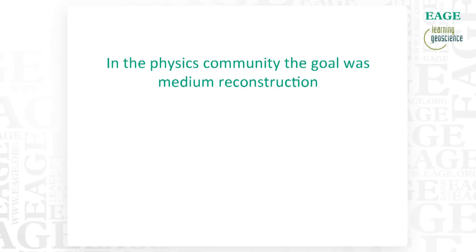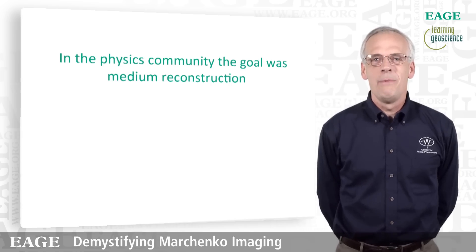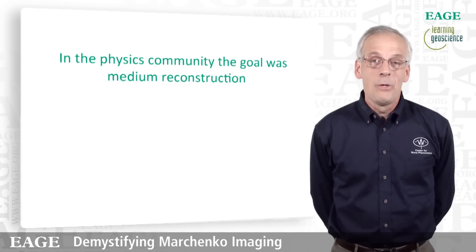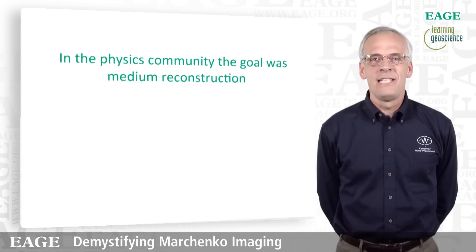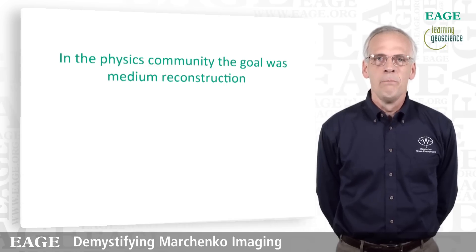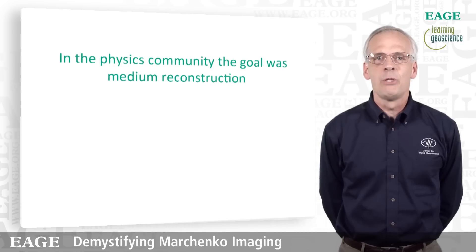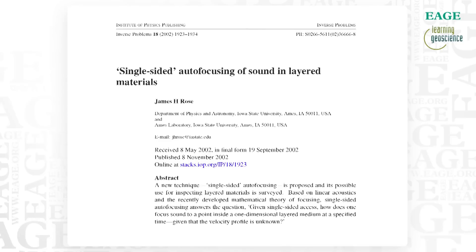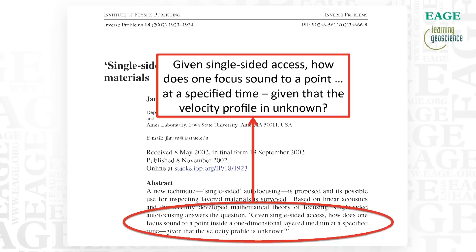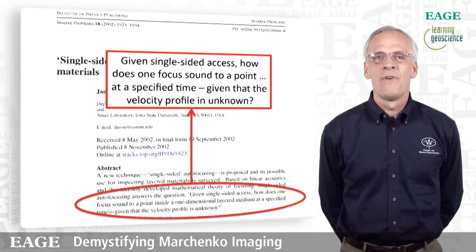So why did it take so long for this concept of Marchenko imaging to become operational? The Marchenko equation was developed in the 1950s — that's 65 years later now. In the physics community the goal was focused on medium reconstruction, while in geophysics we're much more interested in focusing of energy. This connection was made by Jim Rose in the early 2000s, in his paper 'Single-sided Autofocusing of Sound in Layered Materials.' He addressed the question: given single-sided access, how does one focus sound to a point at a specified time given that the velocity profile is unknown?